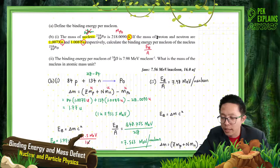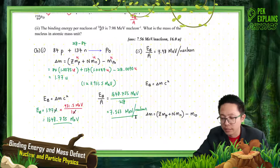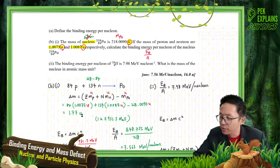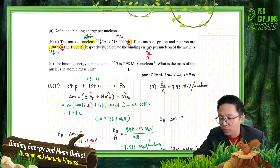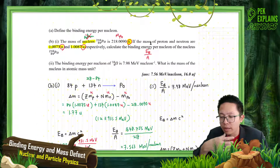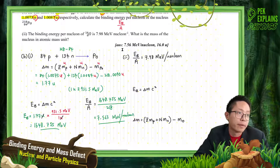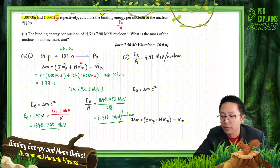The answer is 7.56 MeV per nucleon. This matches the expected answer because we are using the same proton and neutron mass values given in the question. In the previous video the answer differed because different values from the list of constants were used.